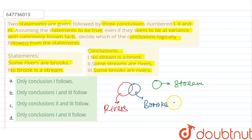I will read it very well. I will read a conclusion. No stream is a brook. Look, statement 2 is the same thing as conclusion 1. The conclusion 1 is correct. No stream is a brook.